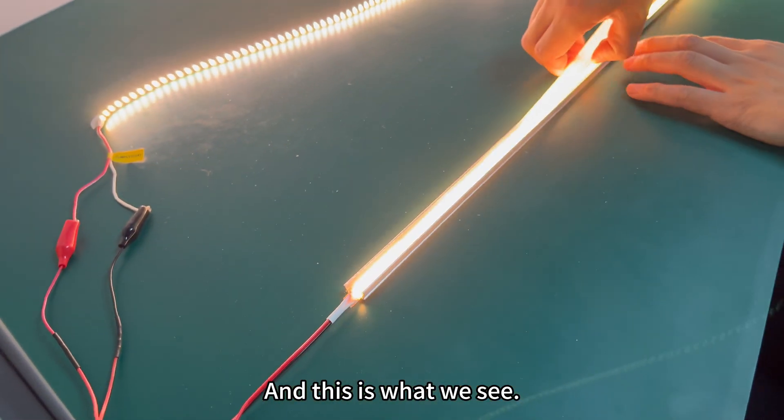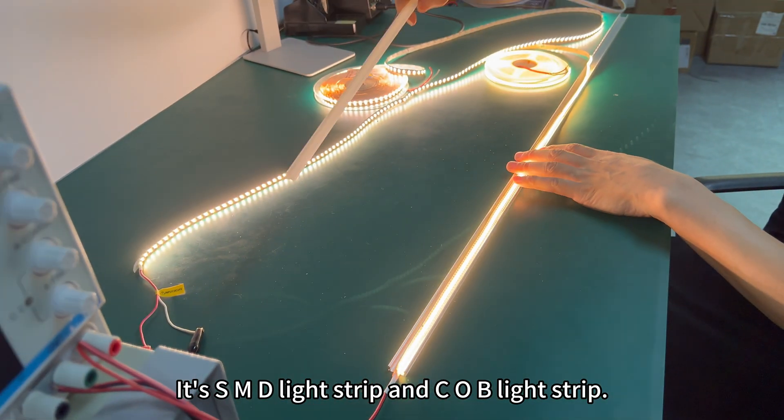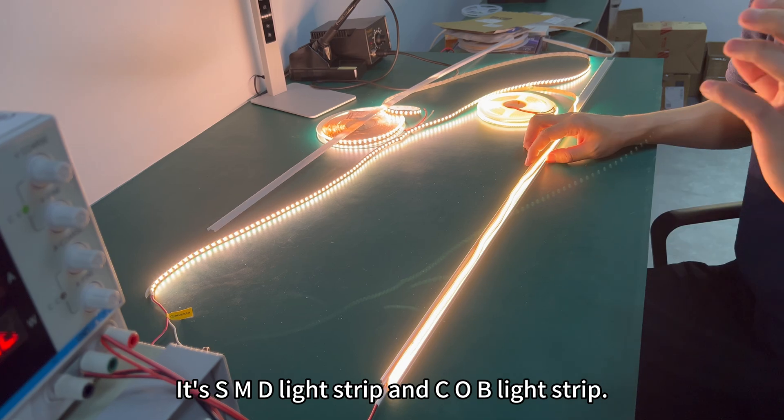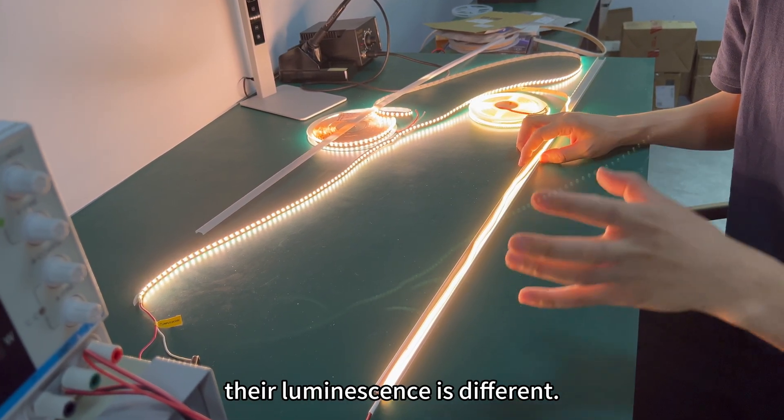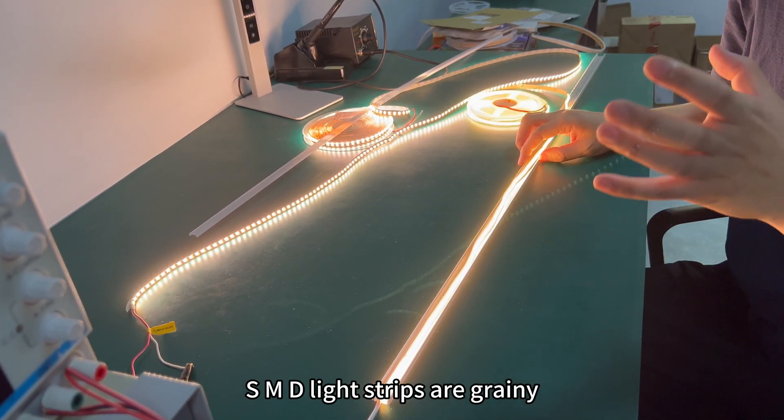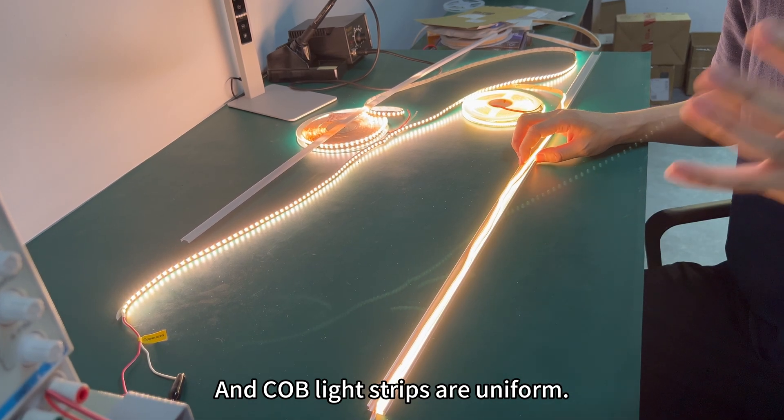And this is what we see. It's SMD light strip and COB light strip, their luminescence is different. SMD light strips are grainy and COB light strips are uniform.